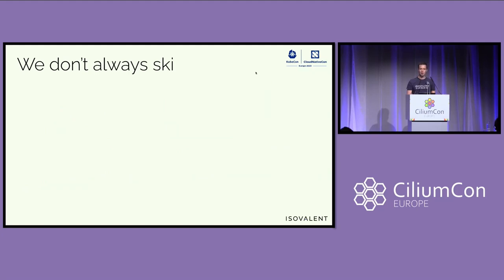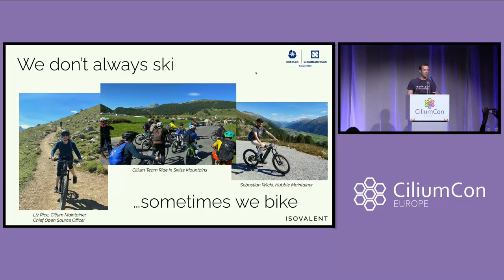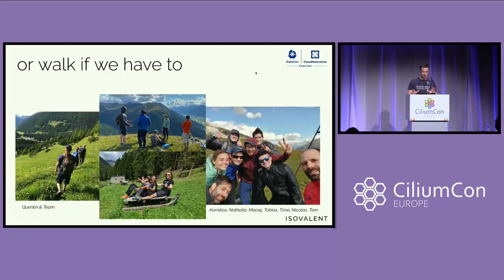We don't always just ski — sometimes we also bike. You see Liz biking here. The Cilium team ran in the Swiss mountains, as well as Sebastian, one of the Hubble maintainers. And if we can't ski or bike, we walk — you see Quentin here, and the team after a nice group hike.